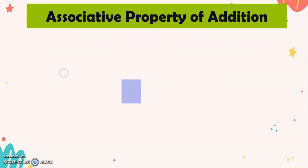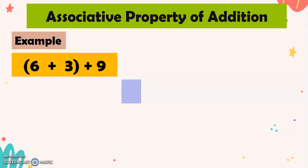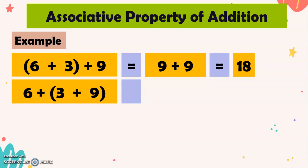Now, we have this time the associative property of addition. For example, open parenthesis, 6 plus 3, close parenthesis, plus 9 is equals to 9 plus 9 equals 18. And 6 plus open parenthesis, 3 plus 9, close parenthesis. Then we have 6 plus 12 equals 18.